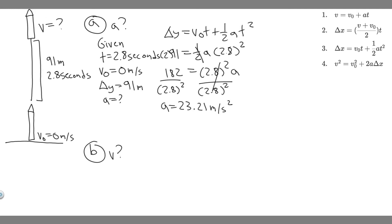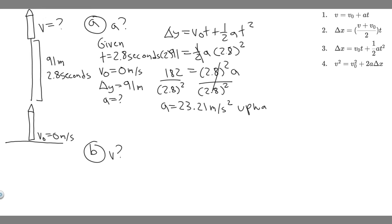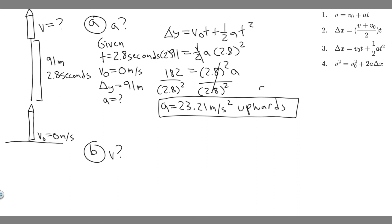When they say magnitude, they're talking about the absolute value, essentially. They also want the direction — the direction is positive. We generally say positive is upwards and negative is downwards, and that's the way we set it up, because Δy was a positive number and we went upwards. So this being positive means it's going upwards. The answer to Part A is 23.21 meters per second squared, upward.